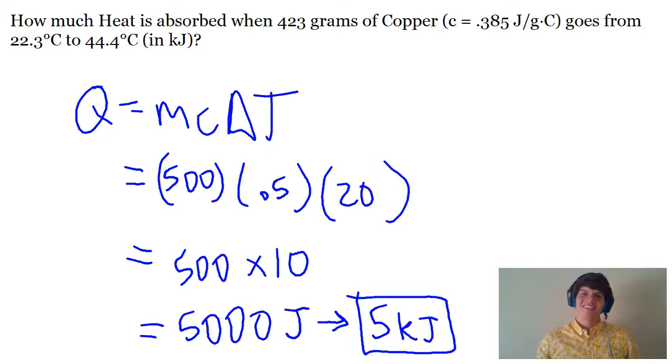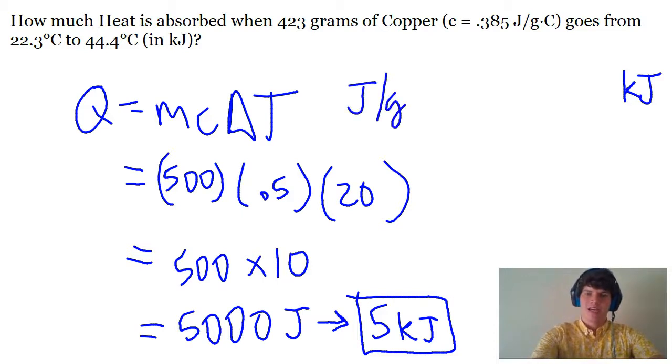The other way to solve this is to simply use the units to figure out what math you should be doing. For instance, we're solving for kilojoules, and we're given the units of joules per gram times Celsius for this copper-specific heat.